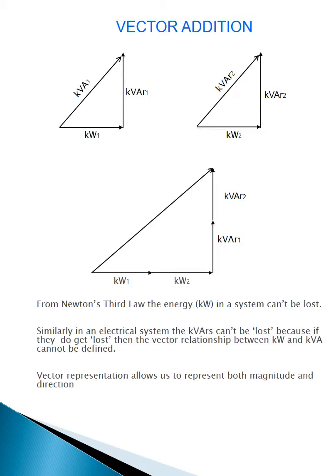As well as trigonometric functions, we can use vector addition of part loads to determine the final load. This is possible only because the power triangle is in fact a vector representation of a load. We know from Newton's third law that energy cannot be lost, so we can easily add the kilowatts of the part loads to find the kilowatt of the total load. In exactly the same way, we can vectorially add kVAR vectors. These can't be lost either, or else the angular relationship of the kilowatt and kVAR would be lost.